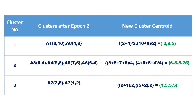Recompute the cluster centroids as before. C1 is (3, 9.5), C2 is (6.5, 5.25), and C3 is (1.5, 3.5).